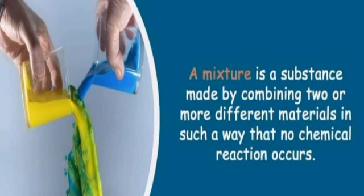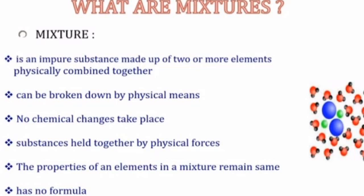Mixture. Matter made up of two or more substances are called mixture. A mixture is a substance made by combining two or more different materials such a way that no chemical reaction occurs. A mixture is an impure substance made up of two or more elements physically combined together, can be broken down by physical means. No chemical changes take place. Substances held together by physical forces, the properties of an element in a mixture remain same, has no formula.